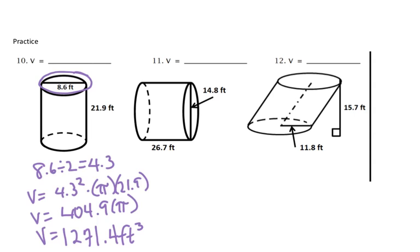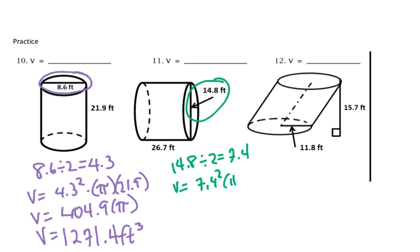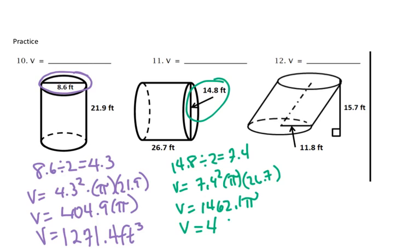In our next example, number 11, we do have a diameter, so we need to take that and divide it by 2. So we're going to take 14.8 divided by 2, which will give us 7.4. For our volume, we're going to get 7.4 squared times pi times 26.7. We'll get a volume of 1,462.1 pi, and we will get 4,591 feet cubed.